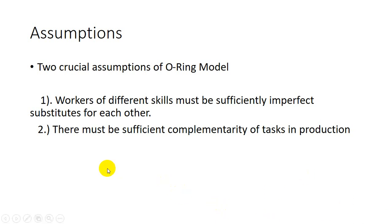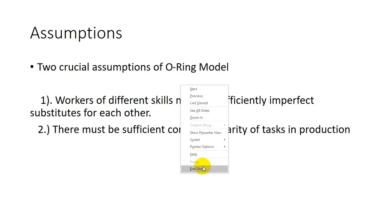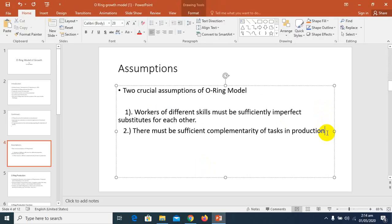The second assumption: there must be sufficient complementarity of tasks in production. If not — for example, if output equals Q1 plus Q2 — then two high-quality workers (HH) and two low-quality workers (LL) produce exactly the same total output as two pairs of high-quality and low-quality workers. There would be no positive assortative matching.